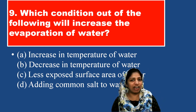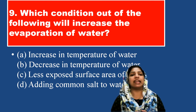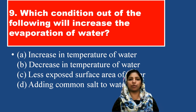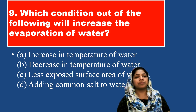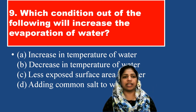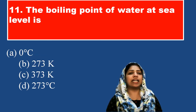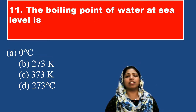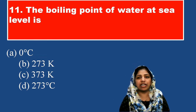We will look at the options. Option A: decrease in temperature — wrong. Less exposed surface area — wrong because surface area increase raises rate of evaporation. Boiling point of water at sea level is 100°C.